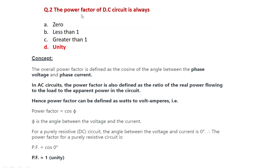The second question: the power factor of a DC circuit is always — options are 0, less than 1, greater than 1, or unity. The power factor of a DC circuit is always unity. The power factor is defined as the cosine of the angle between the phase voltage and phase current, and in an AC circuit it is the ratio of real power to apparent power.